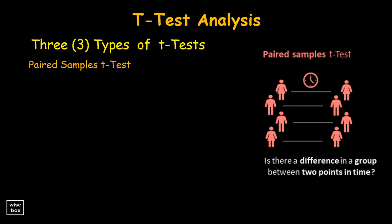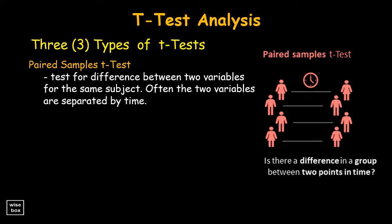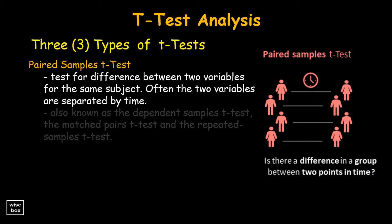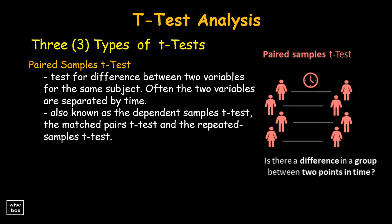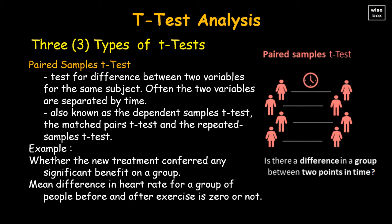The paired samples t-test is a test for difference between two variables for the same subject. Often the two variables are separated by time. It is also known as the dependent samples t-test, the matched pairs t-test, and the repeated samples t-test. Sample statements: whether the new treatment conferred any significant benefit on a group, and whether the mean difference in heart rate for a group of people before and after exercise is zero or not.